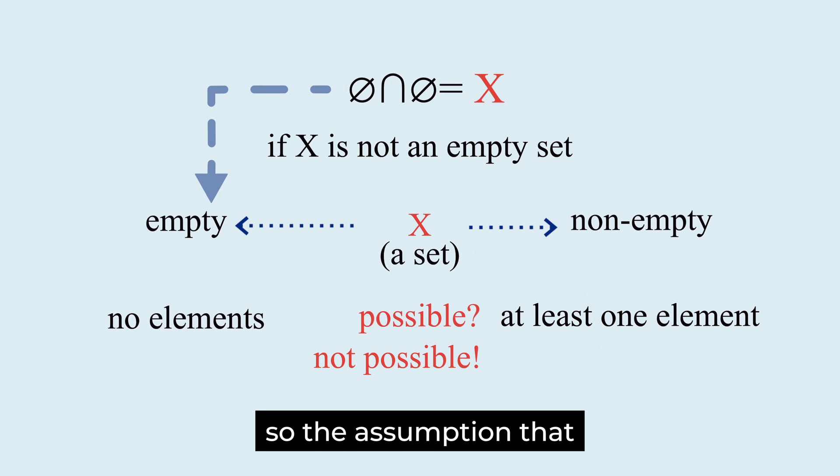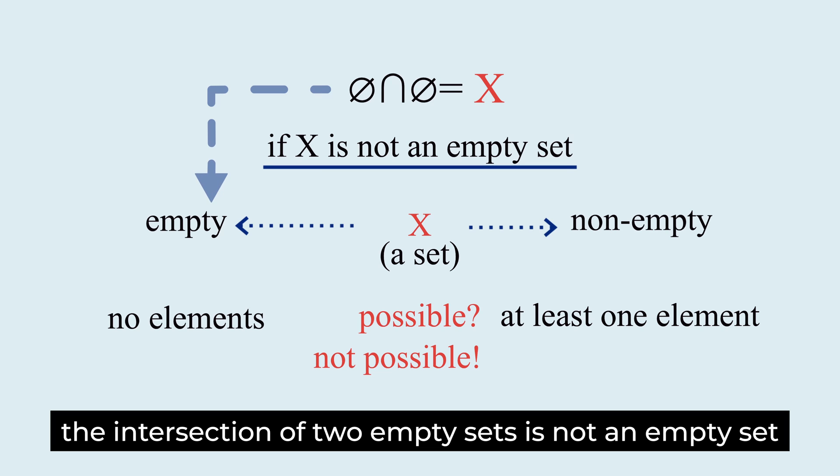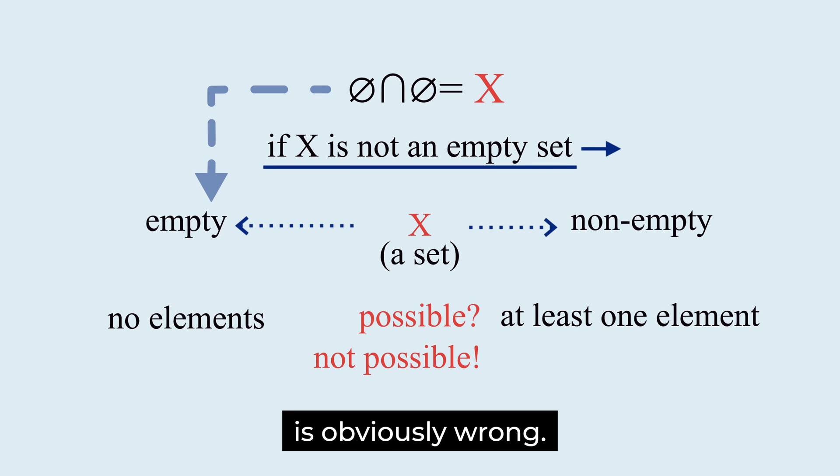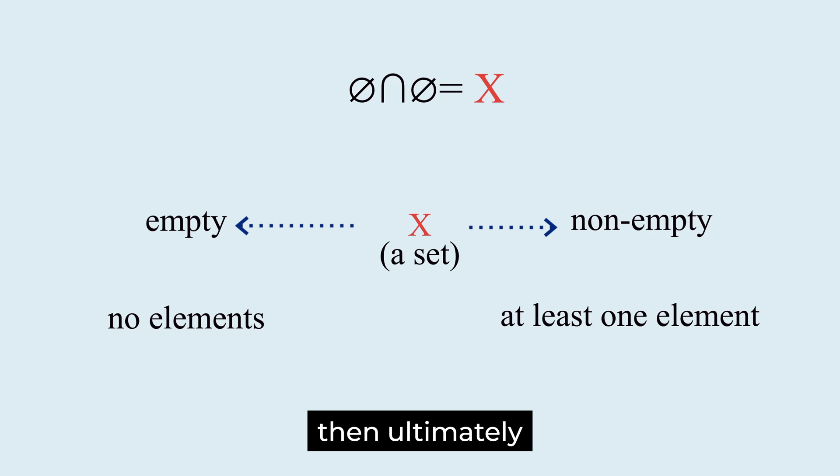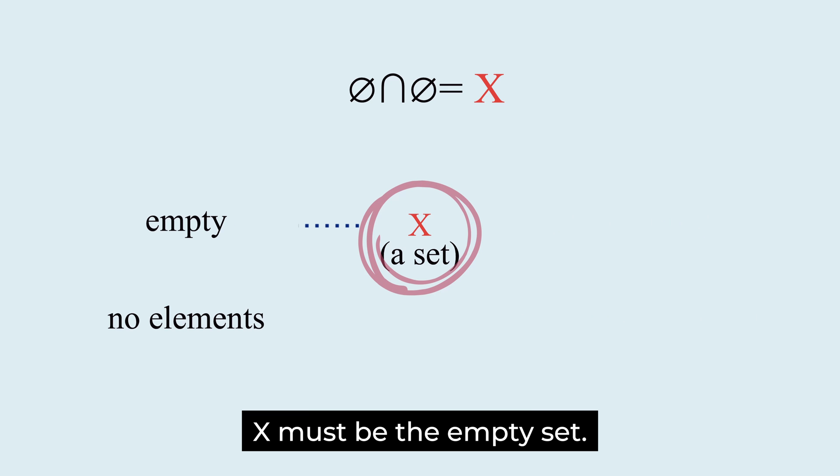So, the assumption that the intersection of two empty sets is not an empty set is obviously wrong. Then, ultimately, X must be the empty set.